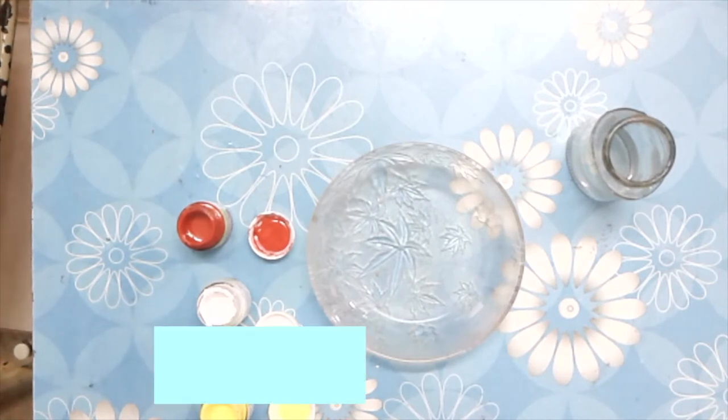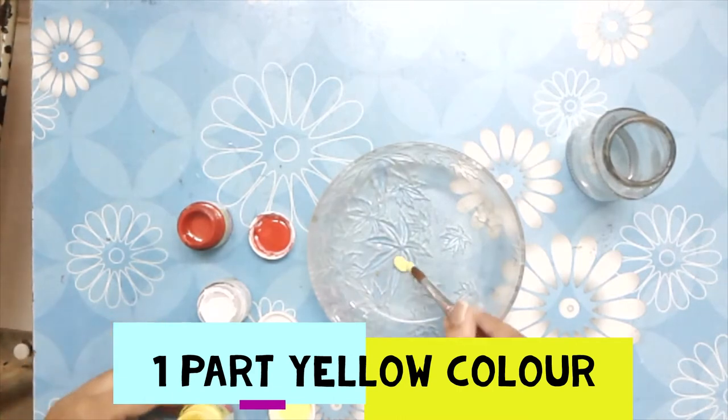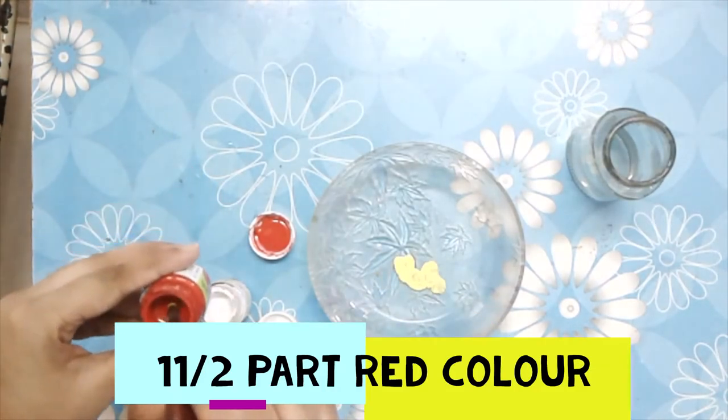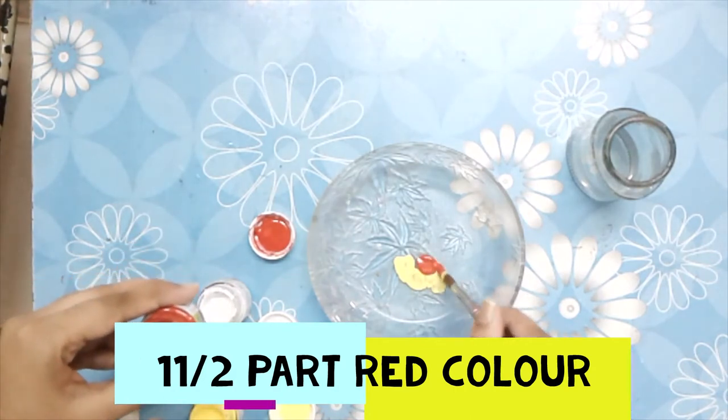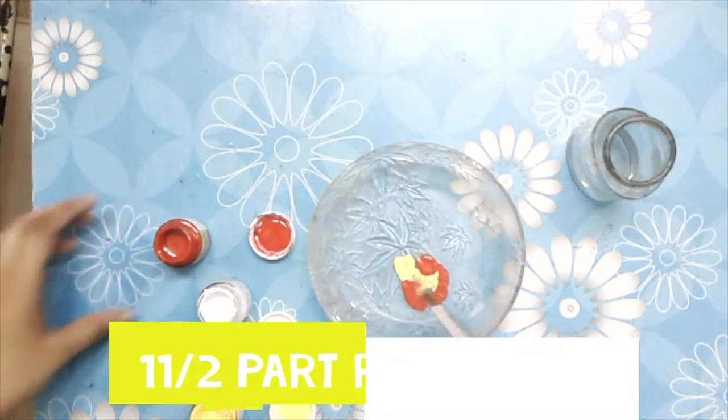To make salmon color, first we'll need one part of yellow color and one and a half parts of red color.